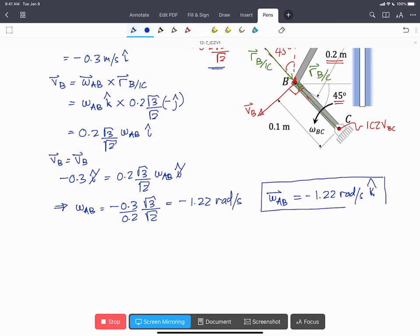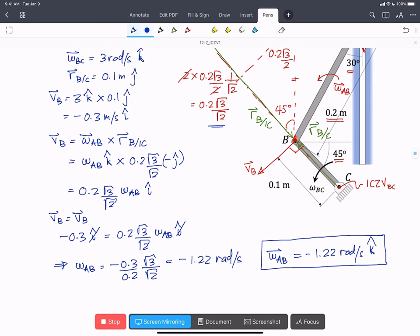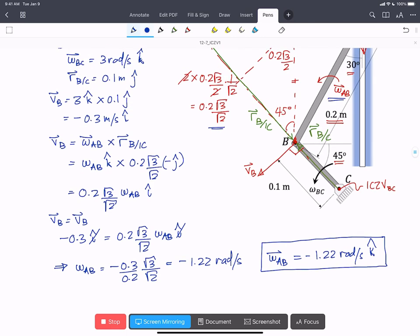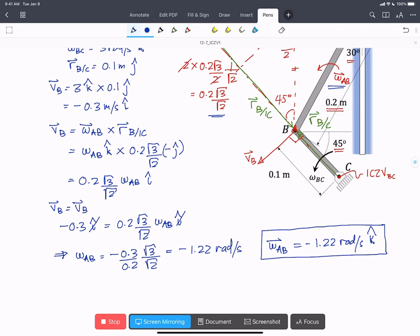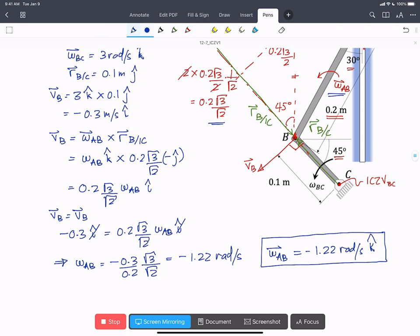Because we got a negative scalar when we calculated omega AB, that tells us that this direction wasn't the right one. It's actually going clockwise. But you can see how the math automatically told us that. And that's how you calculate velocity using ICZV.